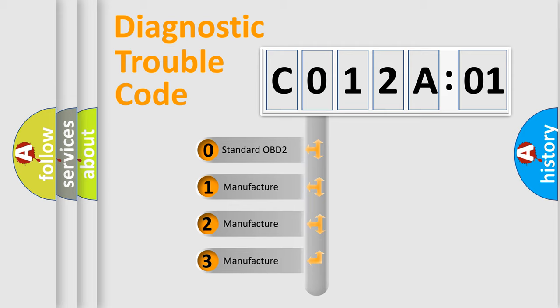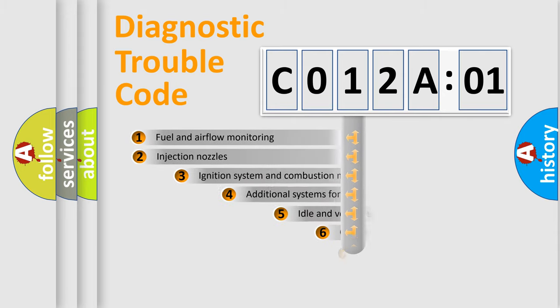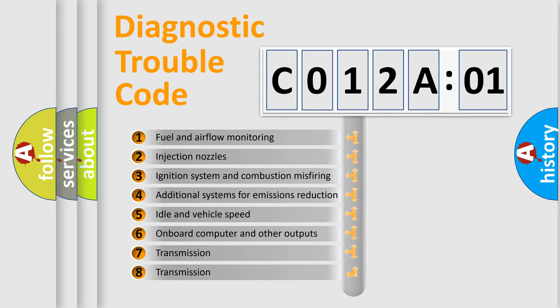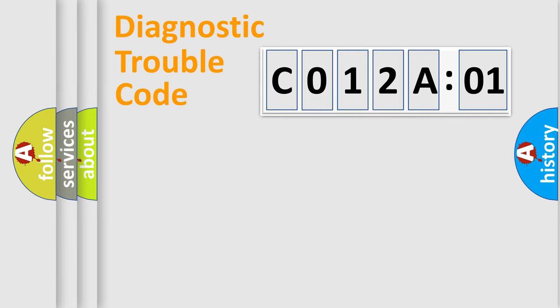If the second character is expressed as 0, it is a standardized error. In the case of numbers 1, 2, 3, it is a more prestigious expression of the car-specific error. The third character specifies a subset of errors. The distribution shown is valid only for the standardized DTC code. Only the last two characters define the specific fault of the group.